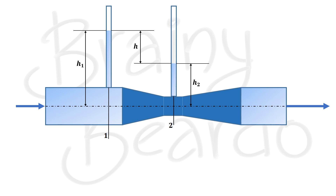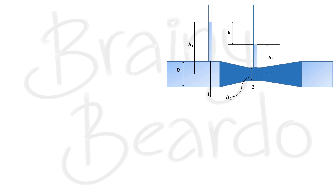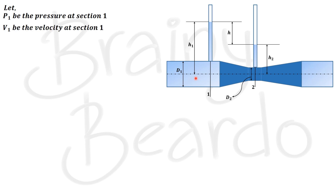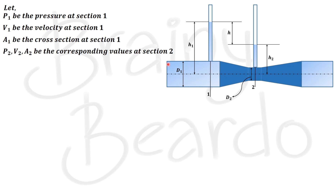For the derivation, let us assume the diameter of the pipe is d1 and the diameter of the throat is d2. At section 1, the pressure is p1, the velocity is v1, and the cross-section area is a1. Similarly, at section 2, the pressure is p2, the velocity is v2, and the area is a2.